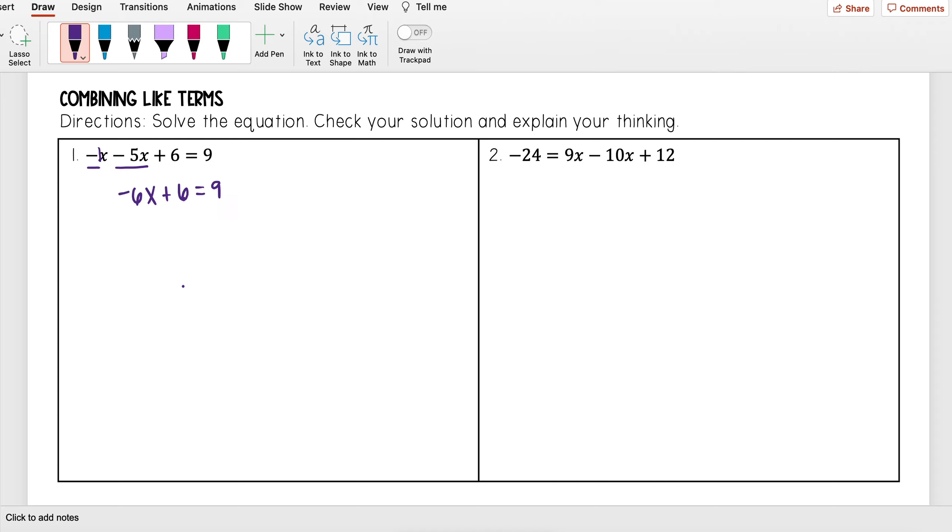And then now from here, I can solve it just like what we learned before. So I want to subtract 6 from both sides first. And 9 minus 6, I get 3. And I'm going to divide both sides by negative 6.